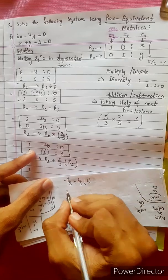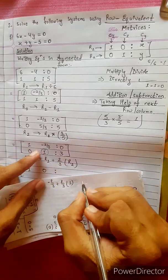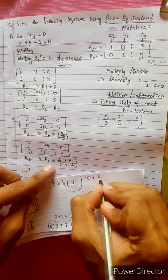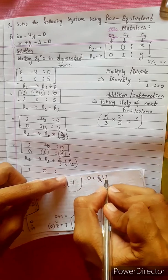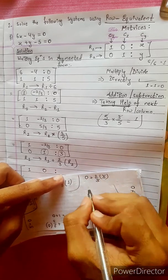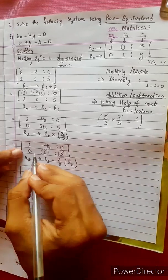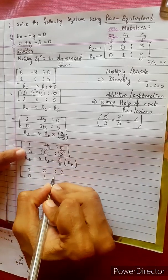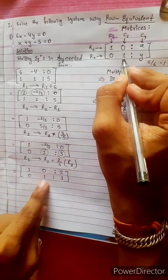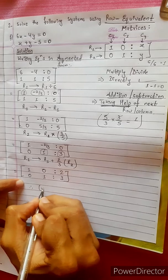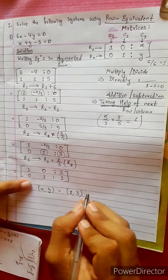Computing R1 plus (2/3) times R2: 1 plus 0 = 1; minus 2/3 plus 2/3 = 0; 0 plus 1 plus 2 = 0. The final matrix gives us: row 1 is [1, 0], row 2 is [0, 1]. Therefore x, y — comparing — y equals 2/3. Answer.